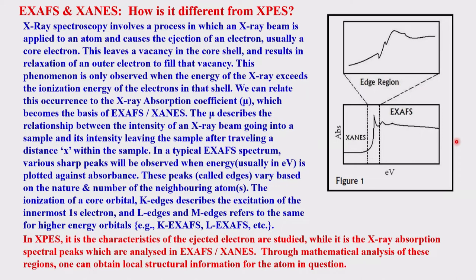Looking at this figure, the XANES region and EXAFS region are shown. This is not the kinetic energy measured in photoelectron spectroscopy — it is the absorption spectrum edges. In the vicinity of the absorption edge there are ups and downs, and you measure these because they contain information about nearest neighbors: their number, nature, and geometry.